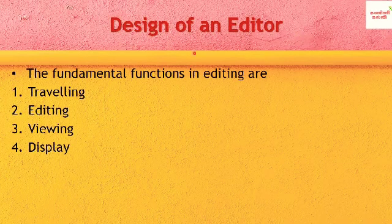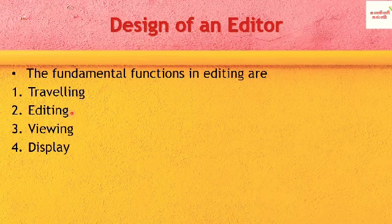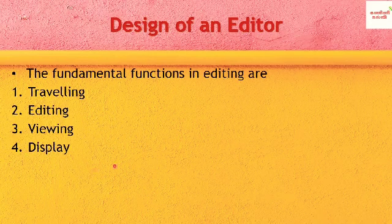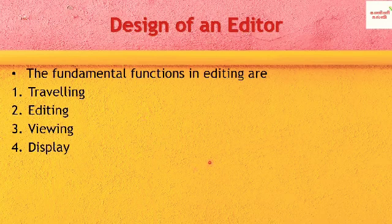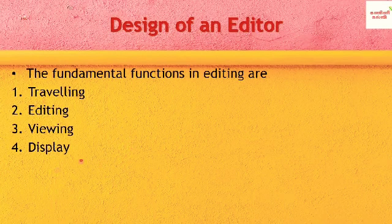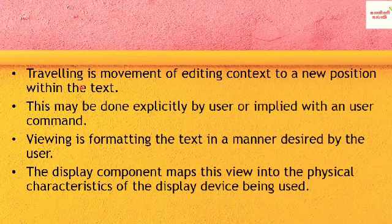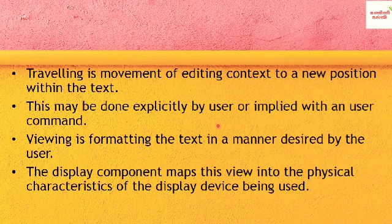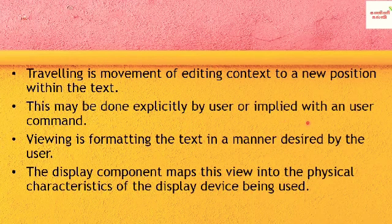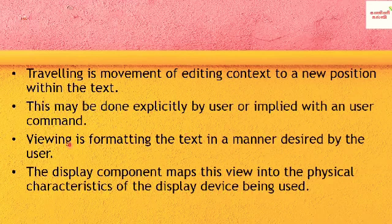Next is the Design of an Editor. Under editor design, there are four main functions: Traveling, Editing, Viewing, and Display. Traveling — also called movement — is the movement of the editing context to a new position within the text. This can be done explicitly by the user using a cursor or mouse, or implied with a user command such as in a line editor.